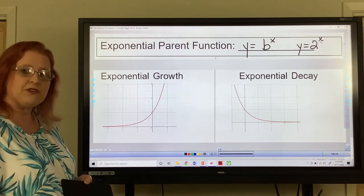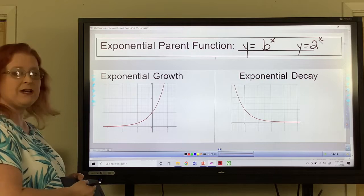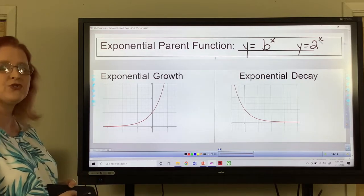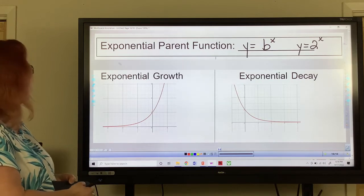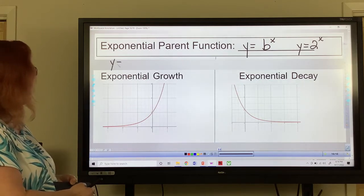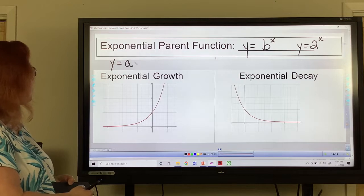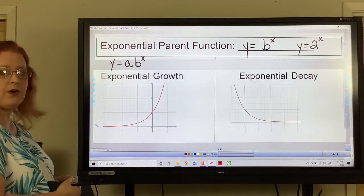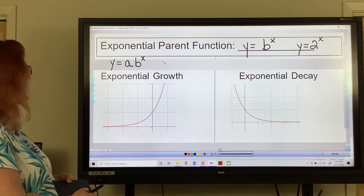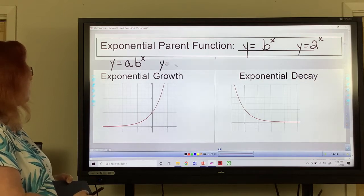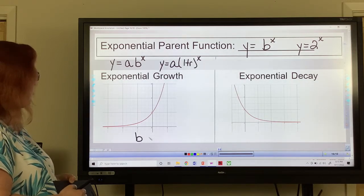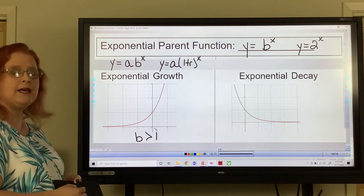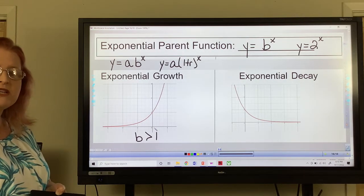Alright, so there are two types of exponential functions that we deal with. The first one is exponential growth and then the second one is exponential decay. So if we have our base function, a number times b to the x power, for growth your b becomes a 1 plus r to the x power. So b has to be greater than 1 for it to be considered exponential growth.